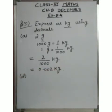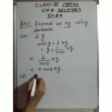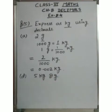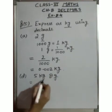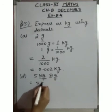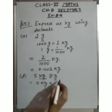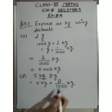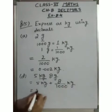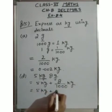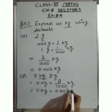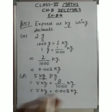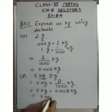D part: 5 kg 8 grams. 5 kg is already in kilograms, so we write it as it is. To convert 8 grams to kilograms, we divide by 1000: 8 upon 1000 = 0.008 kg. So 5 + 0.008 = 5.008 kg. This is the answer.